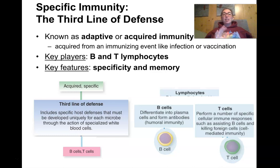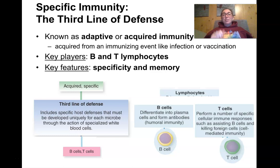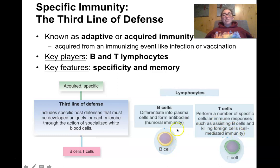This chapter focuses all on the third line of defense, which we call the adaptive or acquired immune response. It's the arm of the immune system that can actually learn, has memory, and very specifically targets different pathogens. Specificity and memory are two key features of this line of defense. The key cells are B cells and T cells, and both are a class of white blood cells known as lymphocytes.